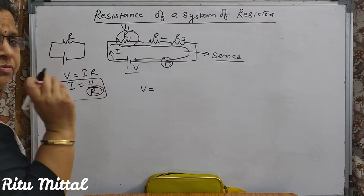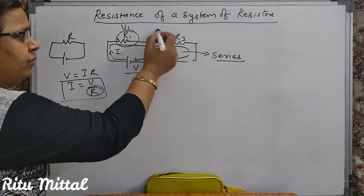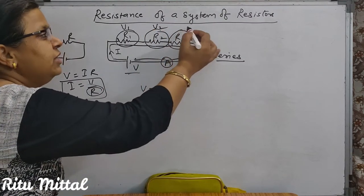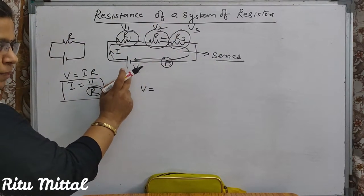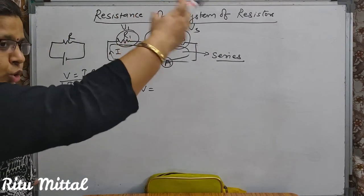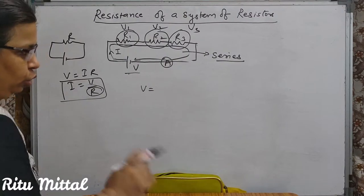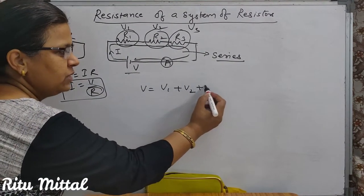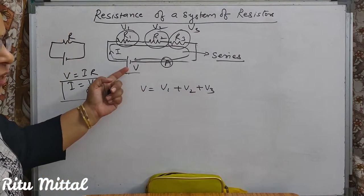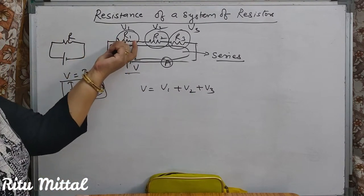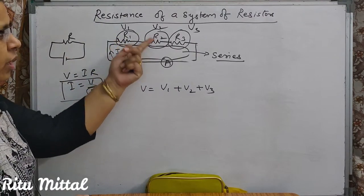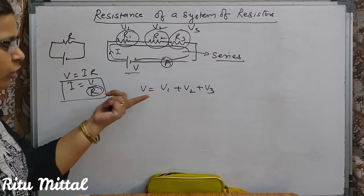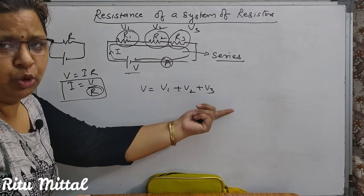Here will be the voltage drop across the second resistance — V2 drop — and across the third resistance — V3 drop. The net voltage is V1 plus V2 plus V3. The voltage V you apply: R1 consumes V1, R2 consumes V2, and R3 consumes V3. So the total voltage that you put in can be distributed.